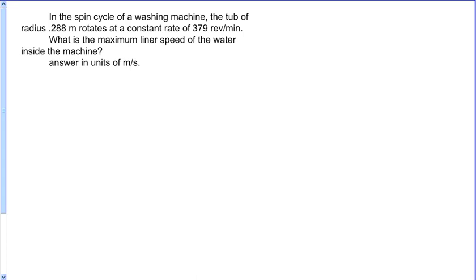The spin cycle of a washing machine: the tub of radius 0.288 meters rotates at a constant rate of 379 revolutions per minute. What is the maximum linear speed of the water inside the machine? Answer in units of meters per second.